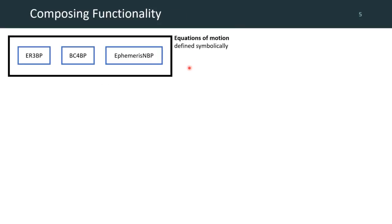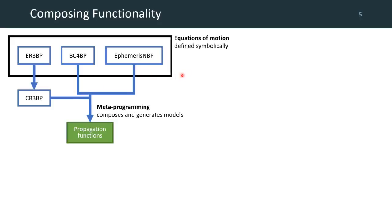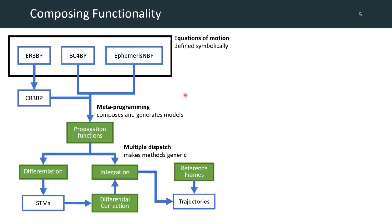Using such techniques, I've been able to define symbolic equations of motion for various astrodynamic models, including the elliptic restricted three-body problem, the bicircular restricted four-body problem, and the ephemeris restricted n-body problem. Now, through metaprogramming, we can automatically generate not only the propagation functions as I showed before, but we can also generate new models directly from the existing ones, such as the circular restricted three-body problem, which simply substitutes an eccentricity of zero into the elliptic model. Currently, I'm also experimenting with composition of models, together with custom perturbations, such as solar radiation pressure.